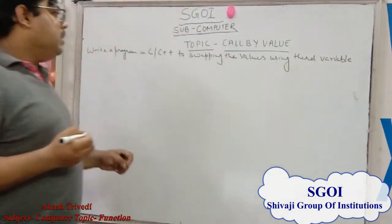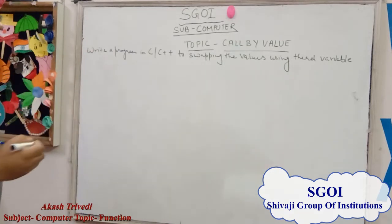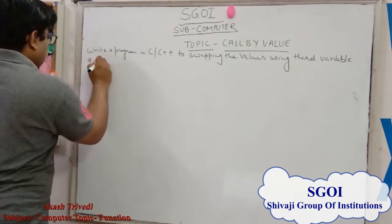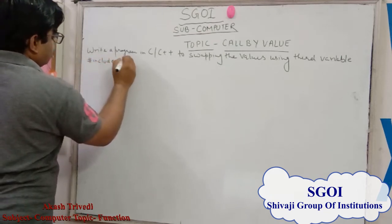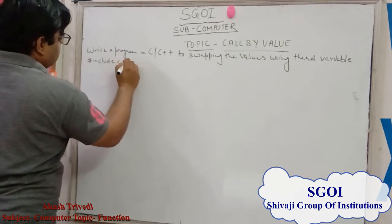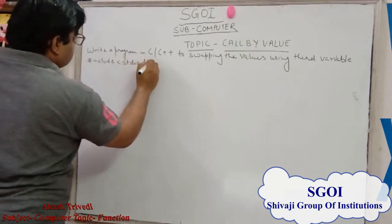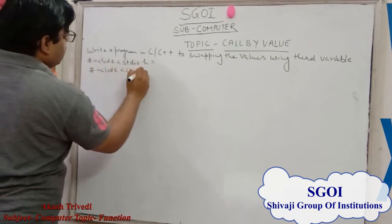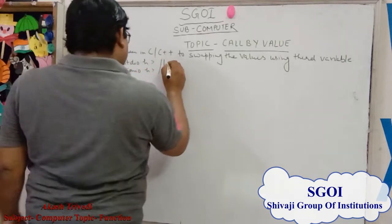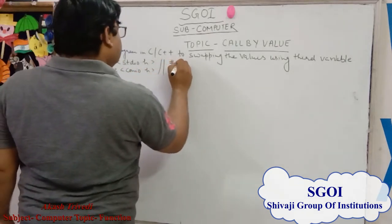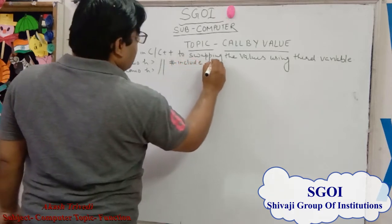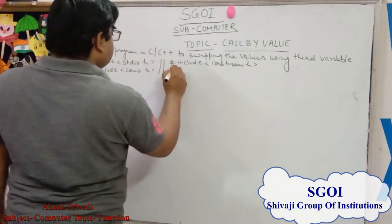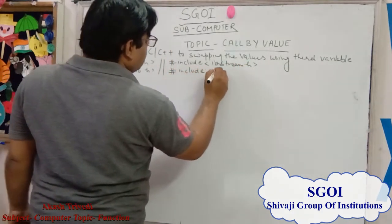If we want to make this program in C and C++, firstly we write the header files. For C, that is #include stdio.h and #include conio.h. For C++, we write #include iostream.h and #include conio.h.